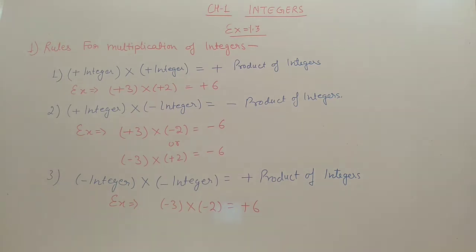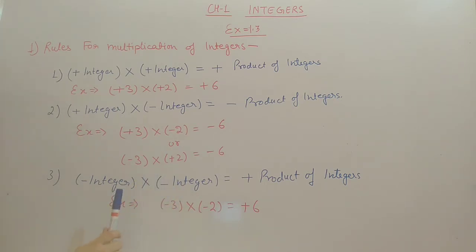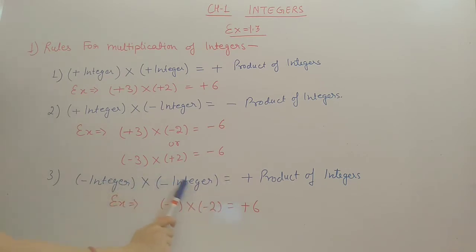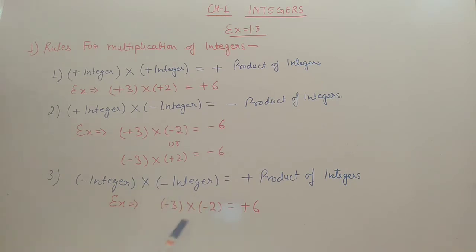Third rule: when both the integers are negative — negative integer multiplied by negative integer. In that case, minus and minus will become plus, and then you have to multiply the two integers. For example, minus 3 multiplied by minus 2 is equal to plus 6. Two minus symbols will become plus.